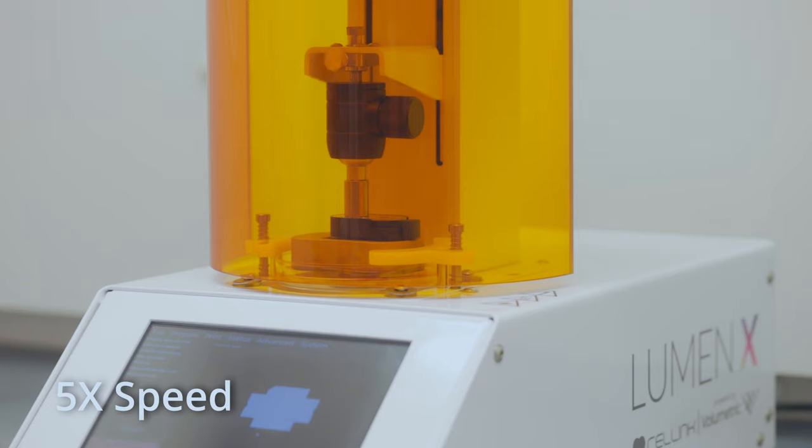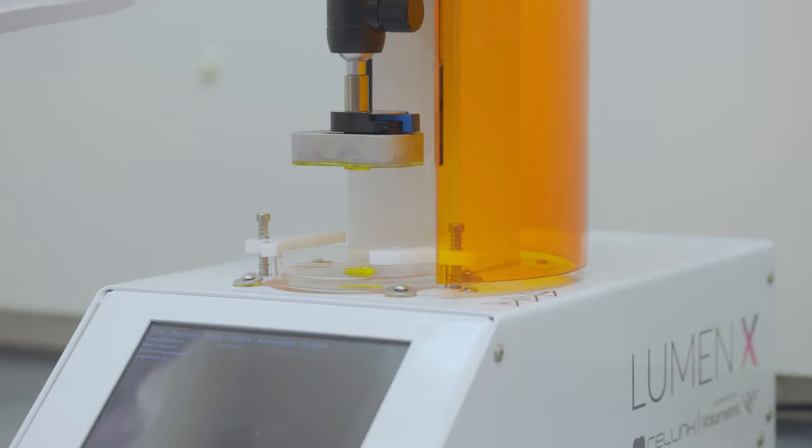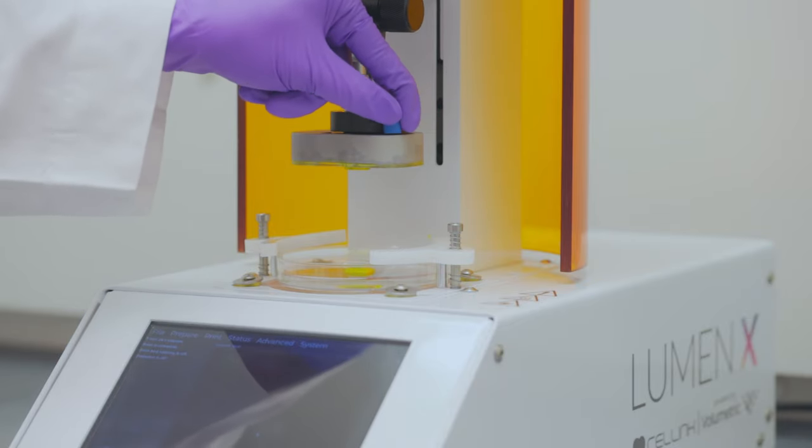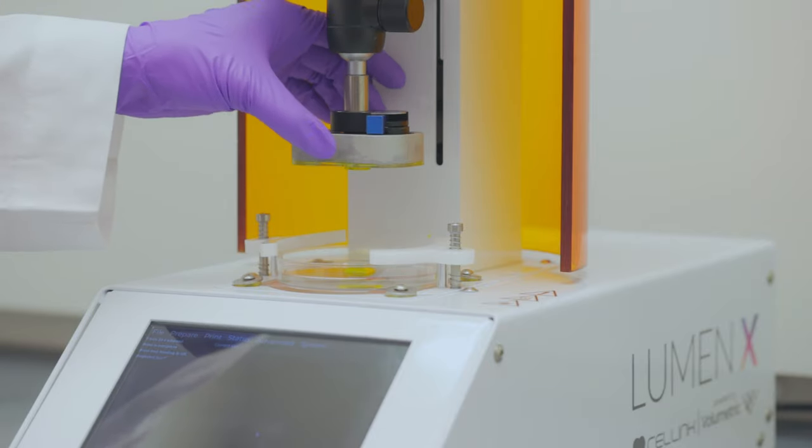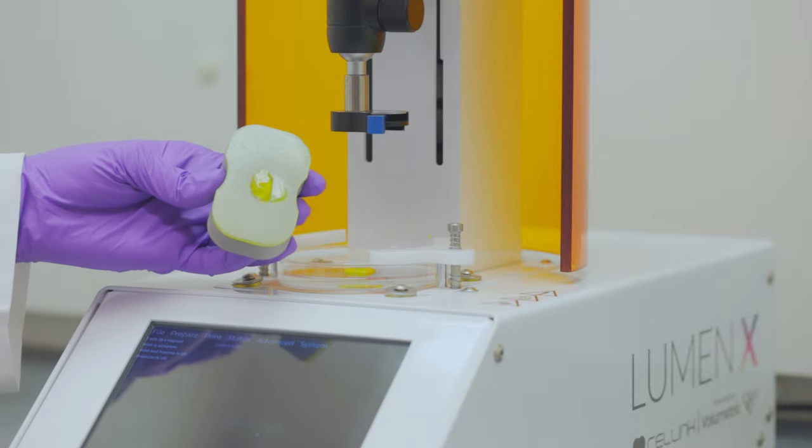After the print is completed, turn the light shield. To remove the build platform, turn the knob clockwise and slide the build platform. And we have the printed object on the build platform.